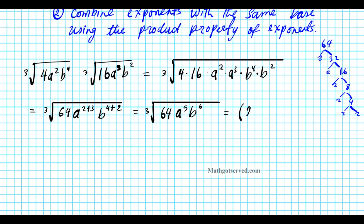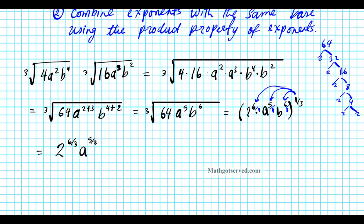So we're going to have 2 to the sixth power times a to the fifth, b to the sixth, raised to the 1 third. Expressing the radicand as a rational exponent, I'm going to use the power of a product property. I'll distribute this 1 third power to each factor: 6 over 1, 5 over 1, 6 over 1 — distributing 1 third to all three powers.